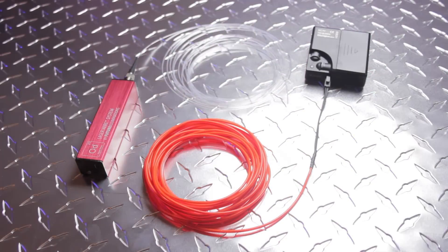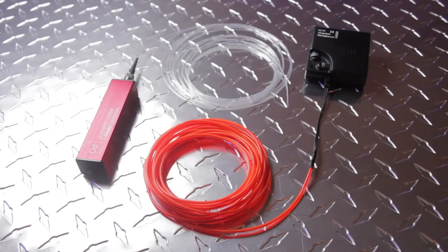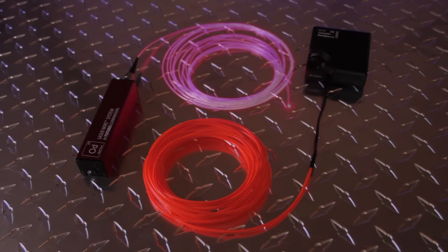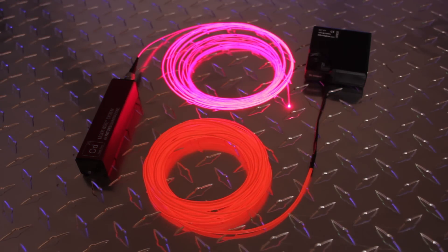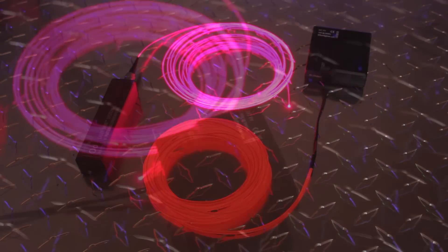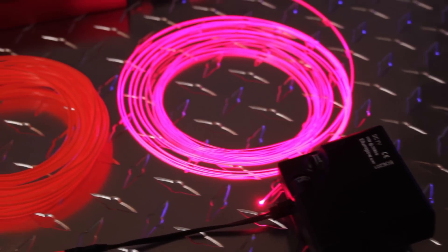At first glance, EL Wire and Laser Wire look similar. They both are accent lighting technologies that can be affixed to wearables, displays, costumes, custom signage, and more, but the similarities end there.